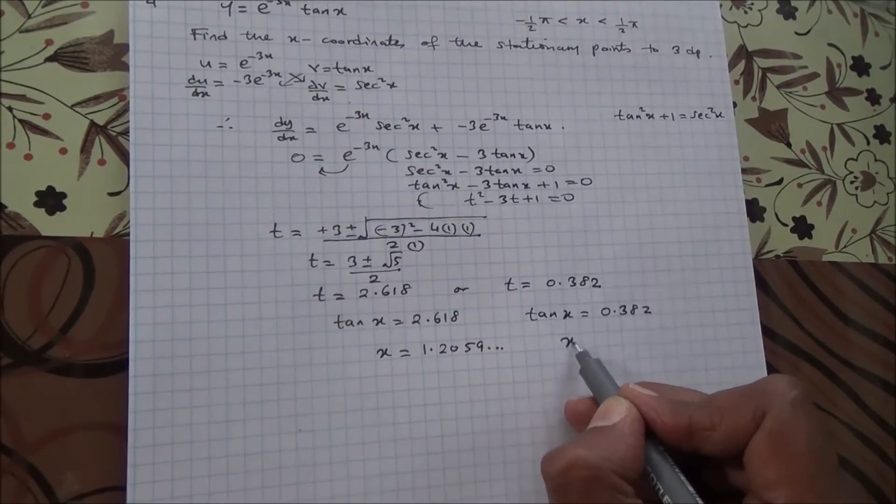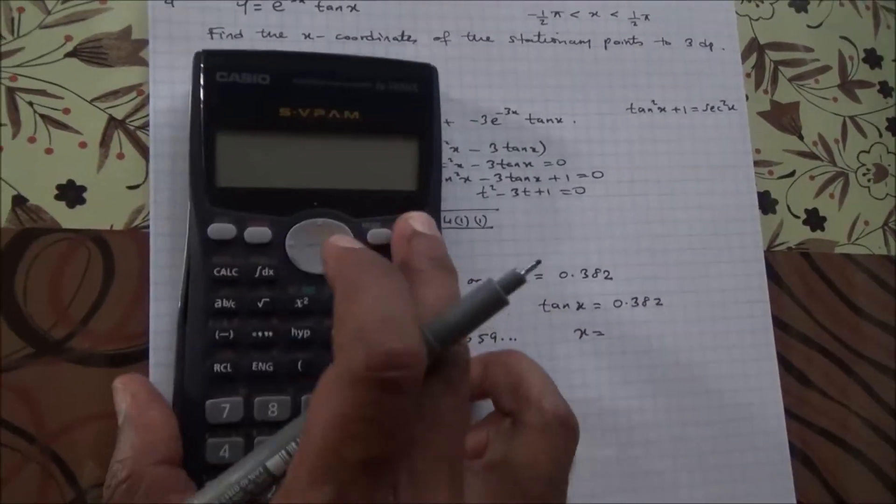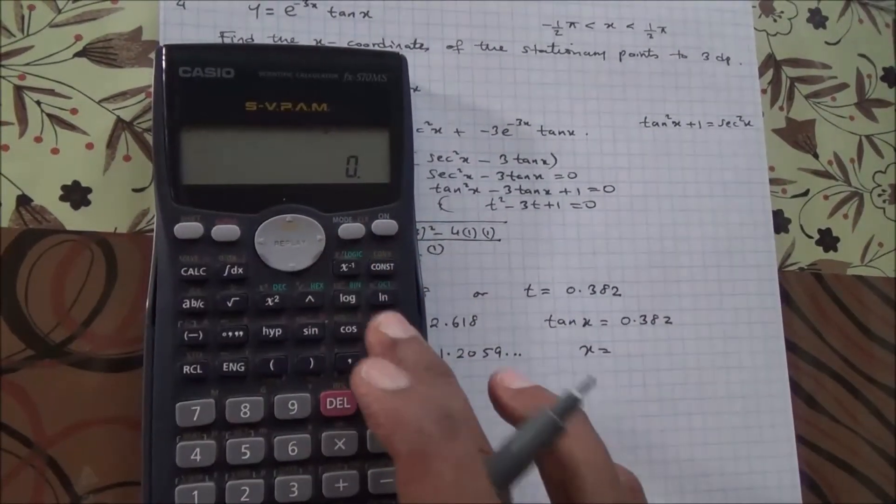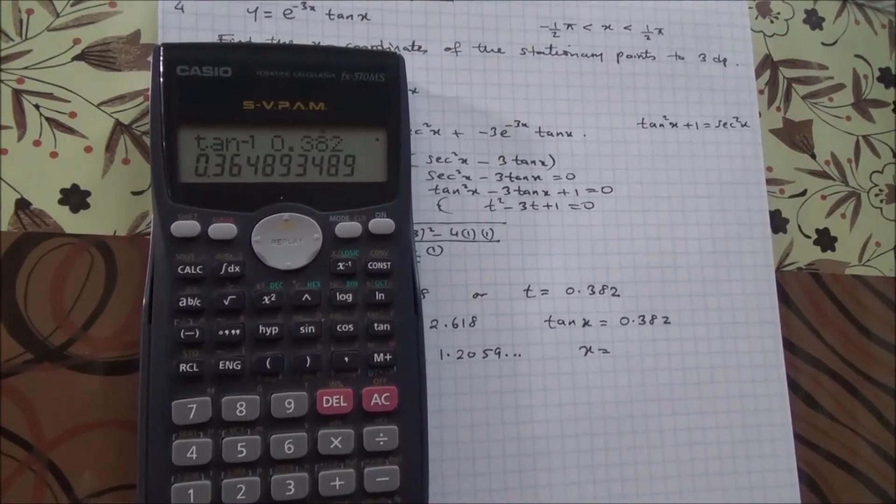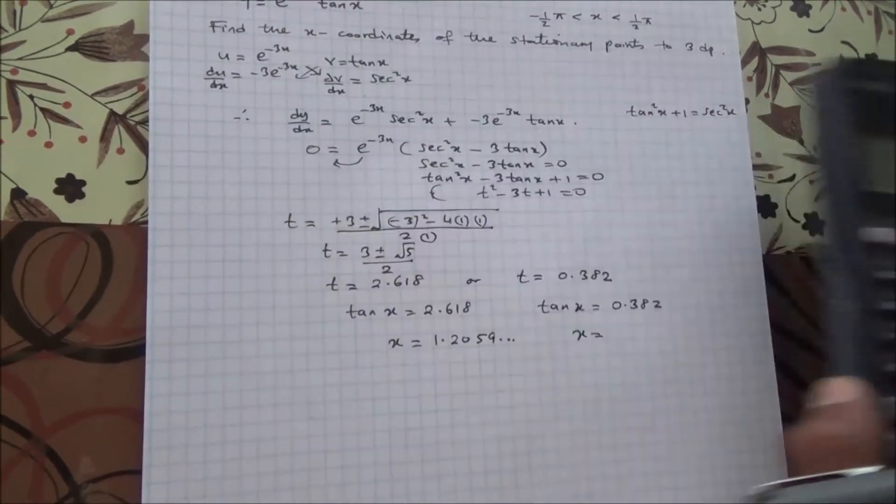And here, you're going to get, let me just check it out here. Right, so inverse tan of 0.382, 0.36489, and so on.